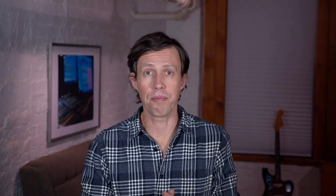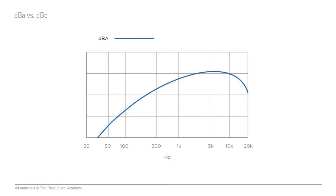So when you're measuring A-weighted decibels at say 95, 100, or 105 decibels — really high SPLs that we see at a lot of concerts — A-weighted decibels don't really take into account the full frequency spectrum. If you take a look at this chart of the frequencies that A-weighting takes into account, you can see that the low frequencies don't really affect DBA.